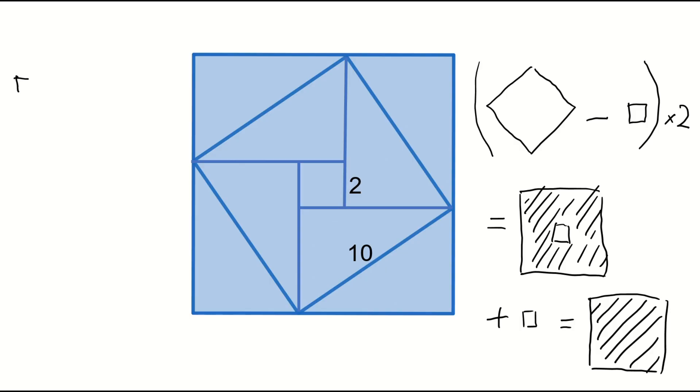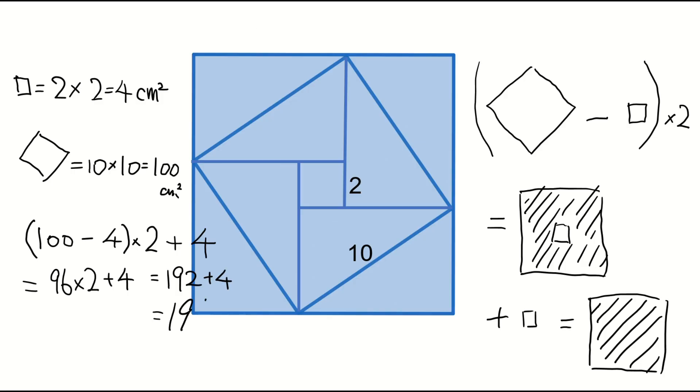The area of the smallest square is 2 times 2 equals 4 square centimeters. The area of the middle square is 10 times 10 equals 100 square centimeters. So, the area of the large square is 100 minus 4, times 2, plus 4, equals 196 square centimeters.